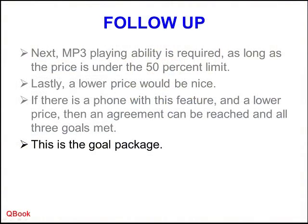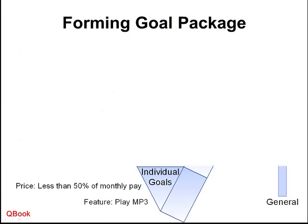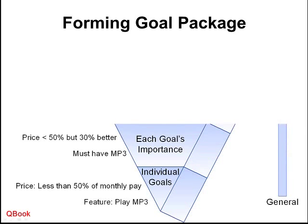Let's take a look graphically at what a goal package can look like. We begin with individual goals: 50% of my monthly part-time pay, and the phone needs to play MP3 files. These are my individual goals. Next, how important are these goals compared to each other, and how important are each of them independently? Can you divide them up into sub-goals? Yes. Price: 50% of my monthly pay is my goal, but 30% would be better. So my highest price I'll pay is 50%, but I'm targeting 30%.